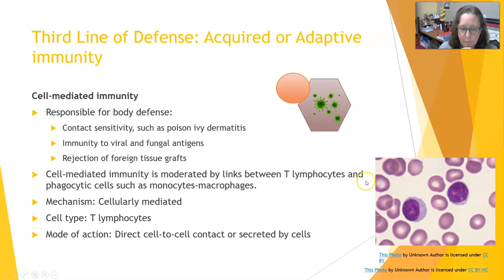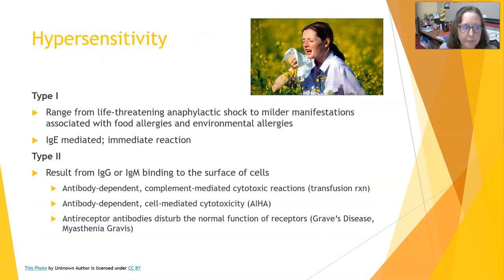Now let's talk about hypersensitivity. There are four types: Type 1, Type 2, Type 3, and Type 4. All hypersensitivity reactions are considered overreactions of the immune system.